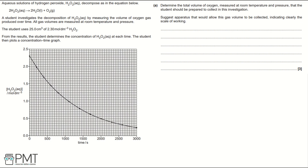From the results, the student determines the concentration of H2O2 aqueous at each time, then plots a concentration-time graph. Part A: determine the total volume of oxygen measured at room temperature and pressure that the student should be prepared to collect in this investigation. Suggest apparatus that would allow this gas volume to be collected, indicating clearly the scale of working.